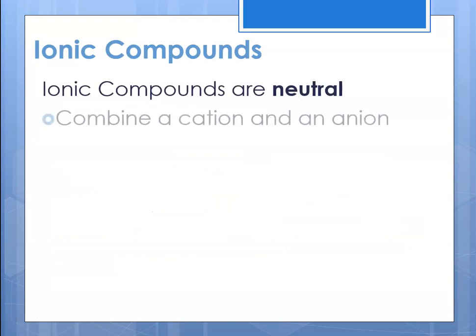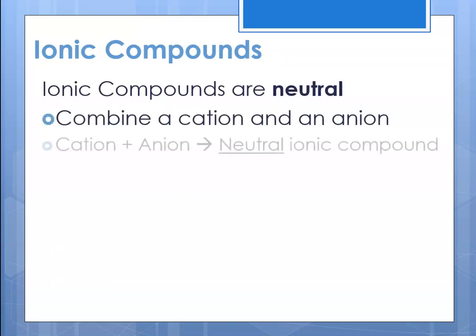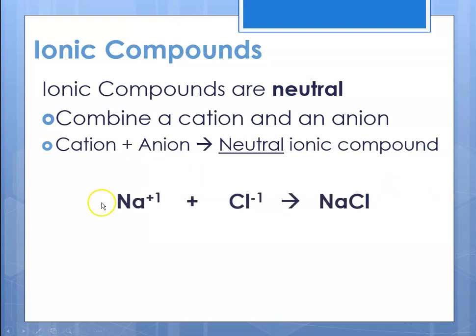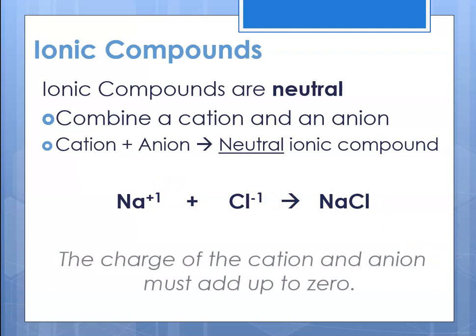Ionic compounds are neutral — that means you're combining a cation and an anion, and the sum of their charges must equal zero. Compounds are always neutral. If something has 'ion' in its name, like sulfate ion or sodium ion, then you know it has a charge. If it's a compound like sodium chloride or carbon dioxide, they're neutral. Plus one minus one equals zero — the charge of the cation and anion have to add up to zero.